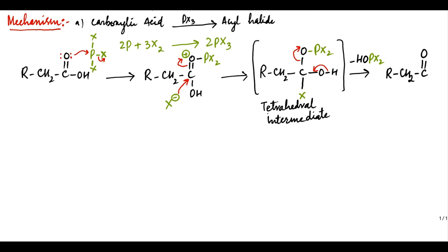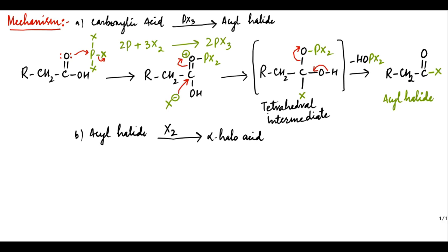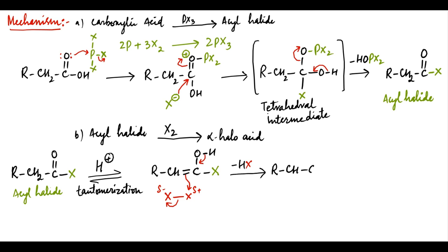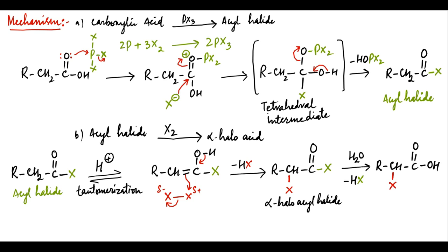The second part of the mechanism is conversion of acyl halide into alpha-haloacid. The acyl halide undergoes tautomerization to form the enol. The halogen subsequently reacts with the enol to afford the alpha-haloacyl halide, accompanied by the loss of a hydrogen halide. The alpha-haloacyl halide is then subjected to hydrolysis to afford the alpha-haloacid.